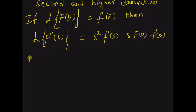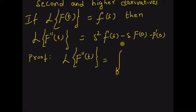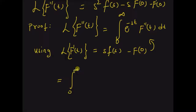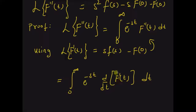Now let us derive this result. The Laplace transform of the second derivative is equal to, by definition, the integral from 0 to infinity of e^(−st) f''(t) dt. Now, using the Laplace transform of the first derivative, defined as s·F(s) minus f(0), and by using this formula in this integral, the integral can be rewritten as the integral from 0 to infinity of e^(−st) times the derivative of f'(t) dt. That is, this is the second derivative of f(t), but it can also be written as the derivative of the first derivative.